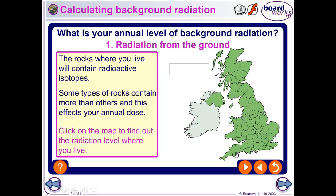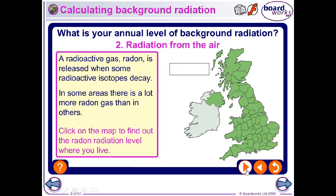For example, at Plymouth the dose from rocks is about 300 micro sieverts per year, while in Nottingham it's around 500 micro sieverts. Scotland has quite high levels. From the air, a radioactive gas called radon is released from decaying rocks — Devon has around 2500 micro sieverts, Nottingham around 1500 micro sieverts, and Scotland about 500 micro sieverts from radon.